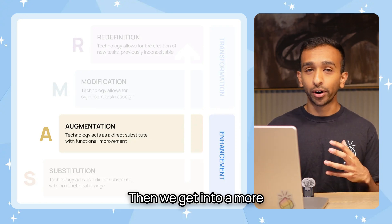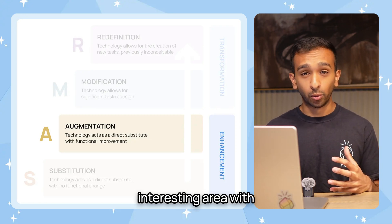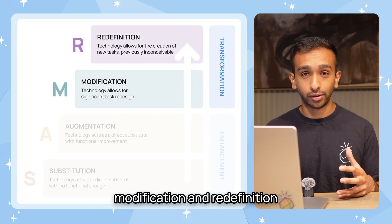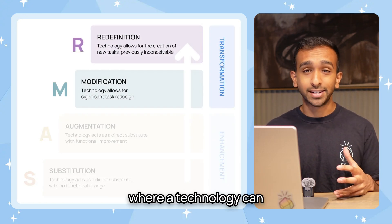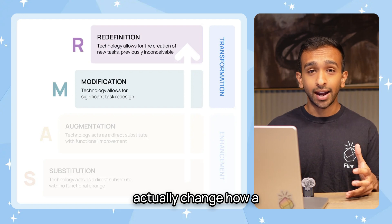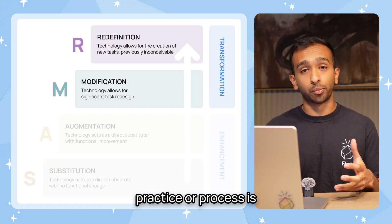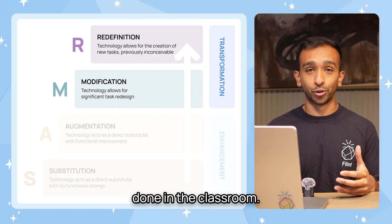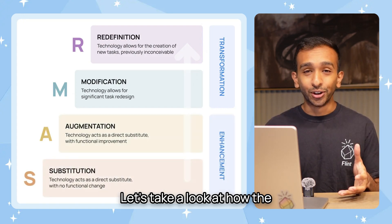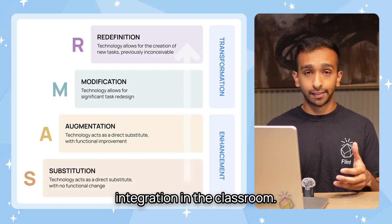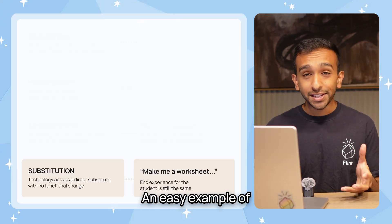Then we get into a more interesting area with modification and redefinition, where a technology can actually change how a practice or process is done in the classroom. Let's take a look at how the SAMR model applies to AI integration in the classroom.